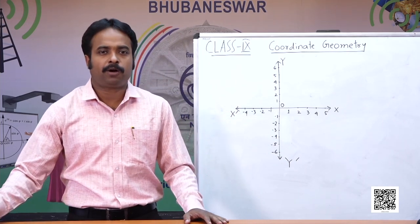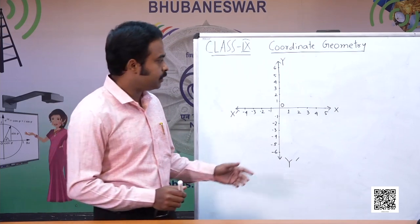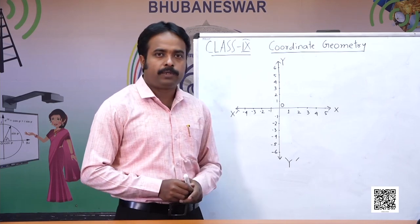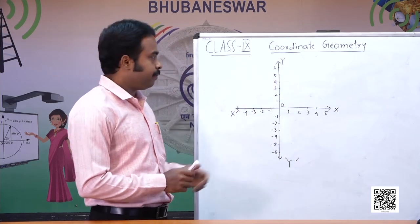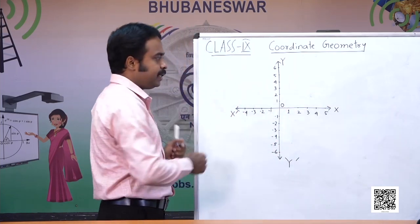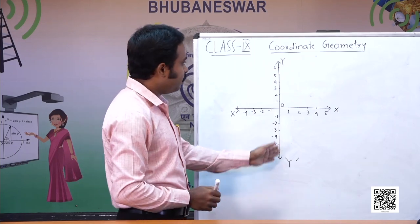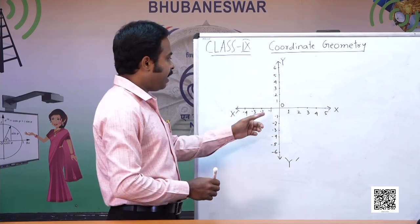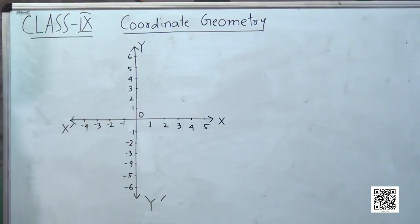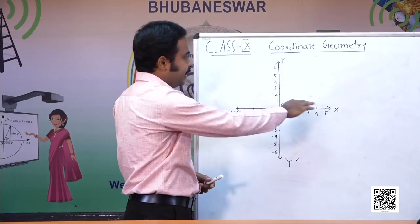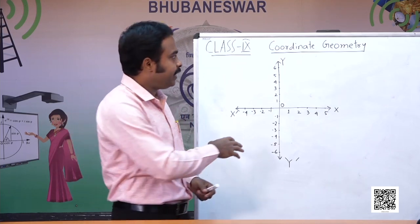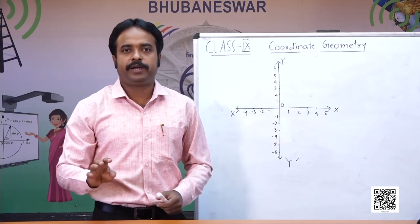Let us quickly recall. Now students, if we take the face of this whiteboard as the Cartesian plane, then you may see that this horizontal line is the x-axis, this vertical line is the y-axis, and they have intersected at the point O, which we are taking as the origin. These two lines are called the Cartesian axes, and they divide the whole plane into four regions.